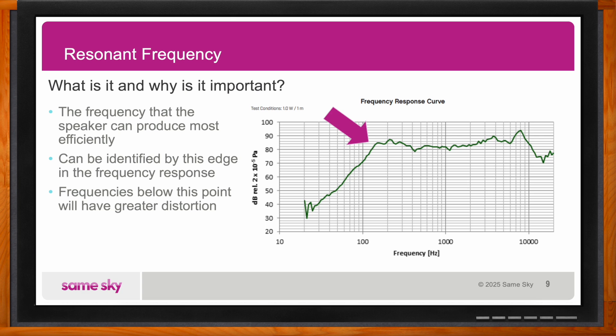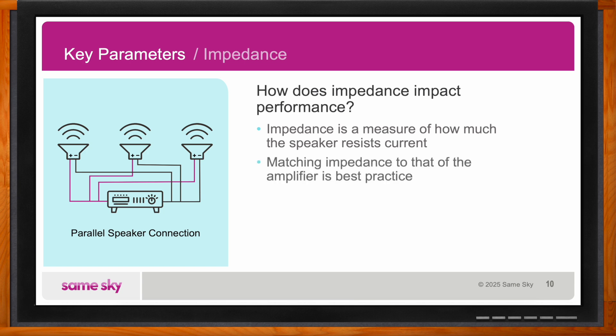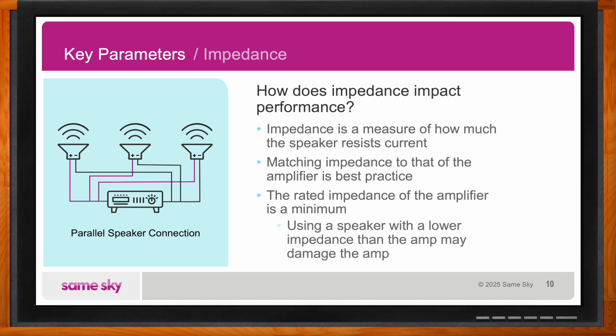What about impedance? The key consideration is to match the impedance of the speaker to that of the amplifier. Even so, in some cases it's okay to use a speaker with a higher impedance than what the amplifier is rated for — the rated impedance of the amplifier is really a minimum. You might experience some sound loss, but it is permissible.